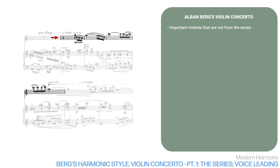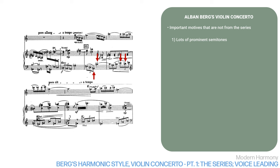Here are two more examples of important motives that aren't from the series. Look at measures 54 to 57, the solo violin line. Although there are bits of whole-tone scales and triads in here, there are also a lot of prominent semitones. The bass line underneath seems to start with a whole-tone motive, but it's in sequence with lots of semitones. In other words, Berg is using semitones as they would be used in traditional harmony to create smooth connections between successive notes. The actual melodic coherence in these lines is more the result of the motives used in sequences than the series.